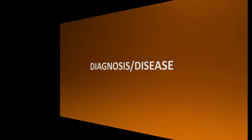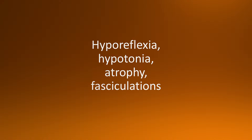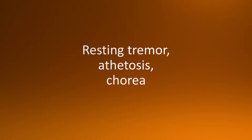On the other side of the flashcard is the diagnosis or disease associated. Please pause the video and try to figure out the answer yourself before I reveal it. Let's begin. On our first flashcard we have: hyporeflexia, hypotonia, atrophy, and fasciculations — the diagnosis is lower motor neuron damage. Next: resting tremor, athetosis, and chorea — the diagnosis is any basal ganglia lesion.